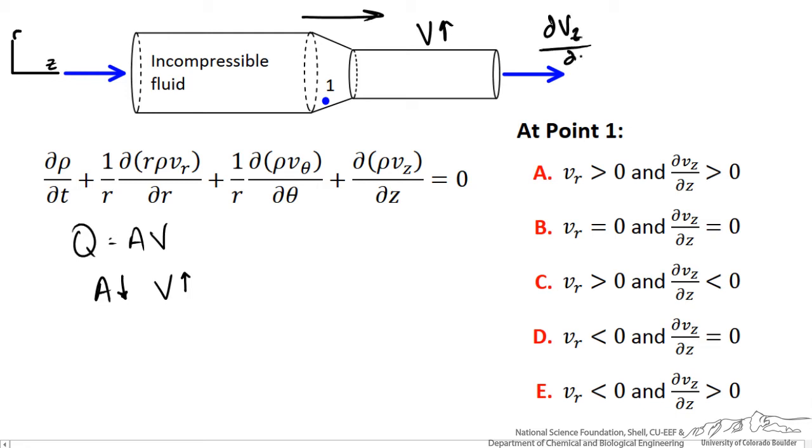So dvz/dz, or the change in the axial velocity with distance, is greater than zero. So far so good.